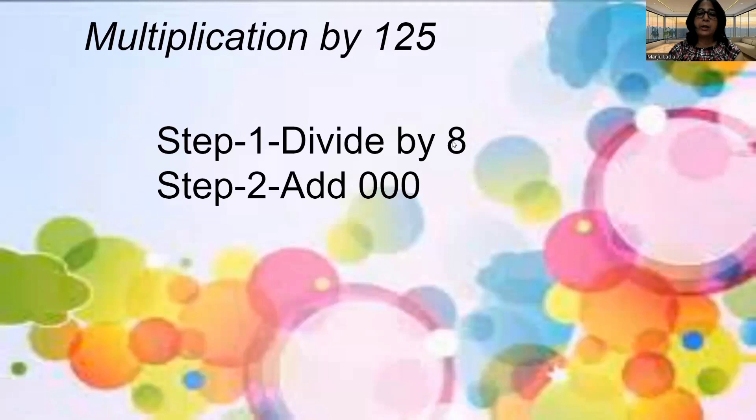So what's the step? Step 1: divide by 8. That means divide that number, the given number by 8, and add triple 0. Because in 1000, how many 0's are there? Three 0's are there. So we will add three 0's.